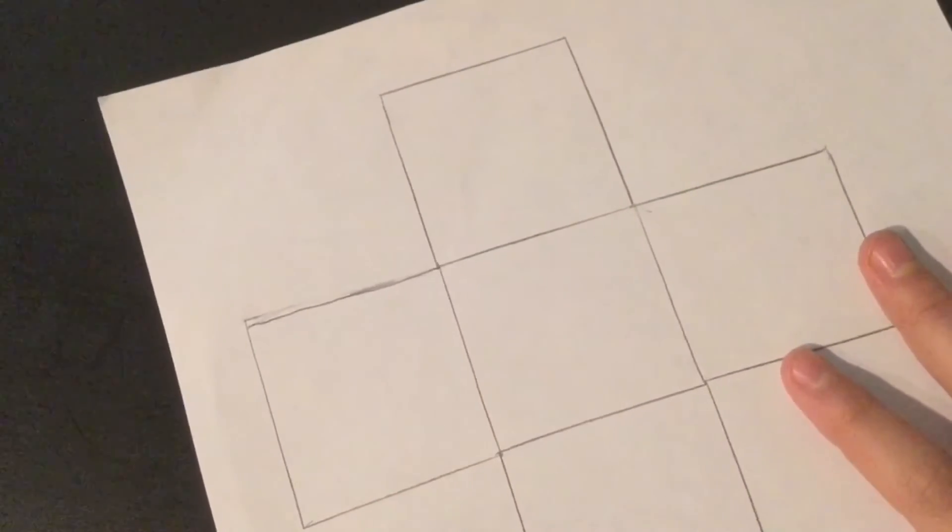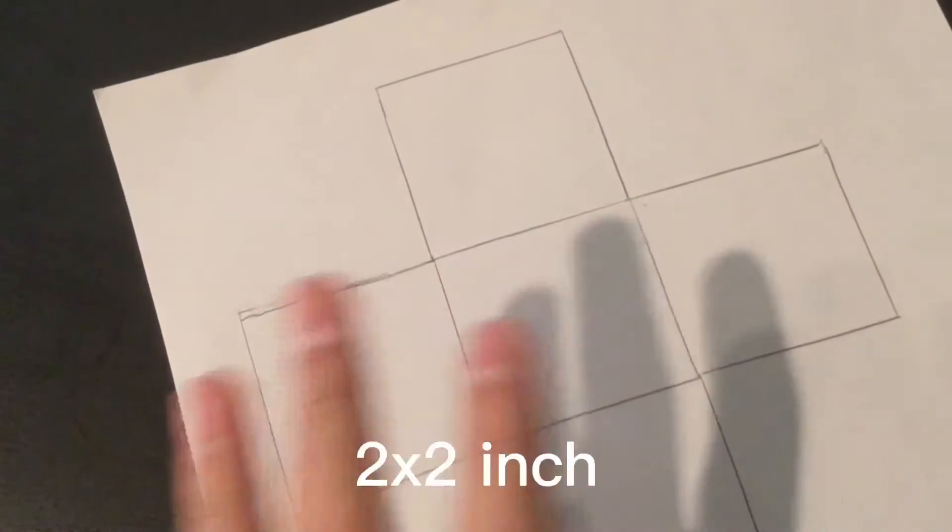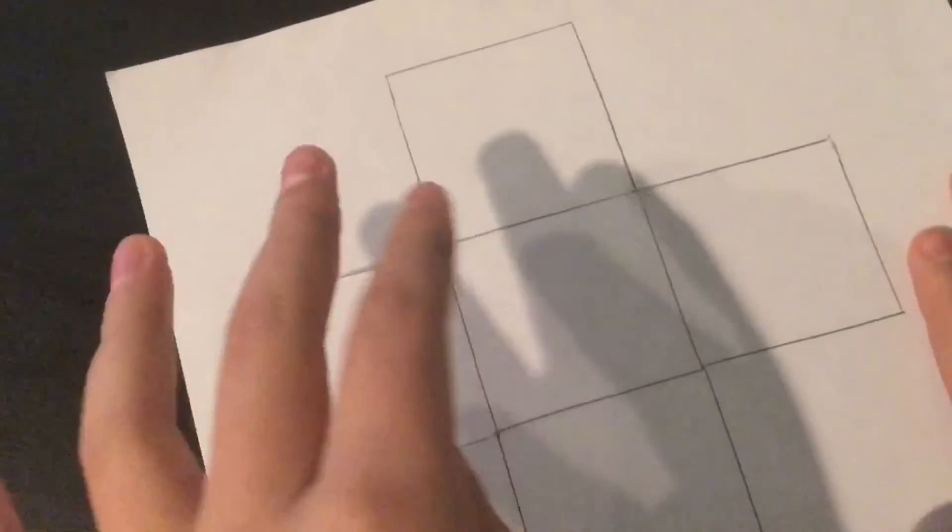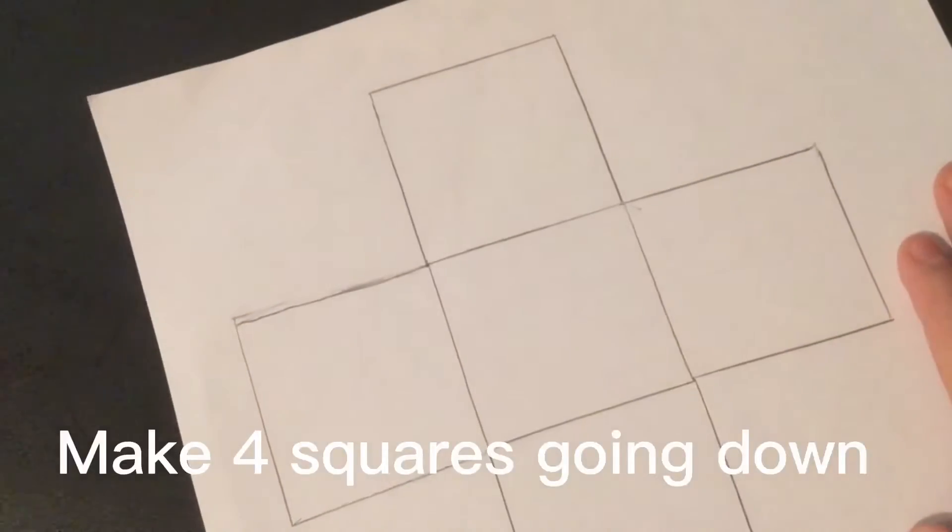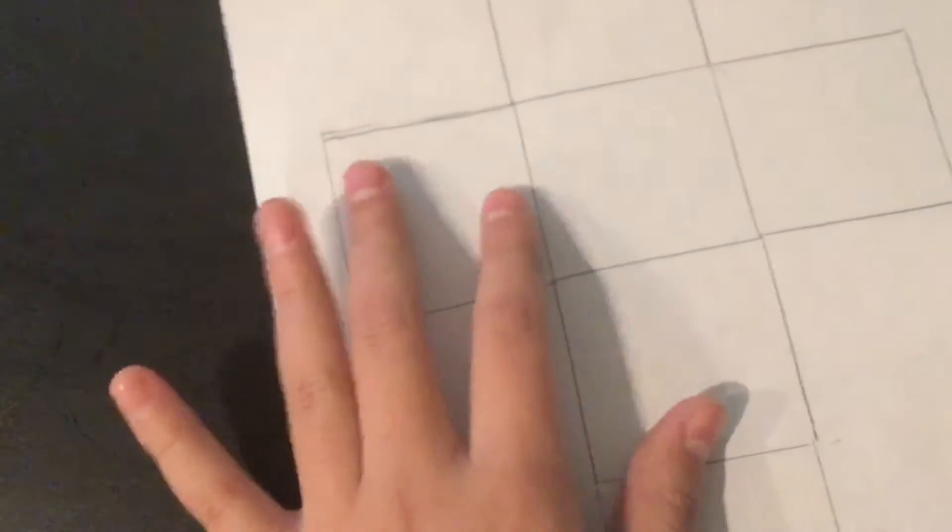This is the template you're going to want to make. I did each square two by two inches, so I did pretty much four in a row and then I just added two inside so it should look like a cross. Color it however you want.